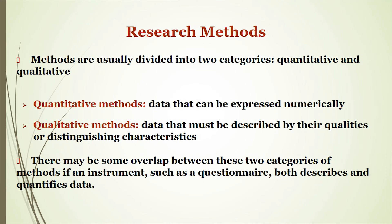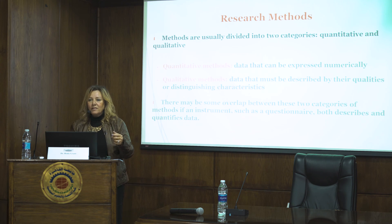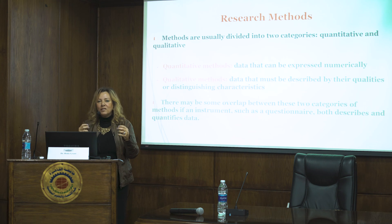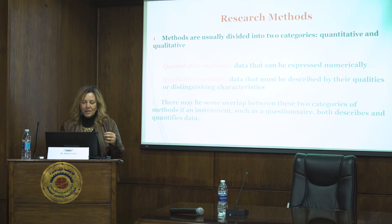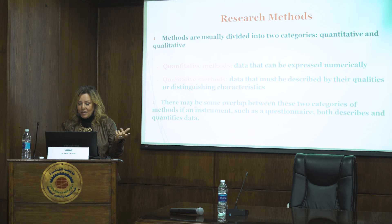Qualitative is the other type I would like to speak about, and this is data that must be described by their qualities or distinguishing characteristics. There are no numbers like in quantitative data, but these two types of methods can overlap — for example, if a questionnaire both describes and quantifies the data.